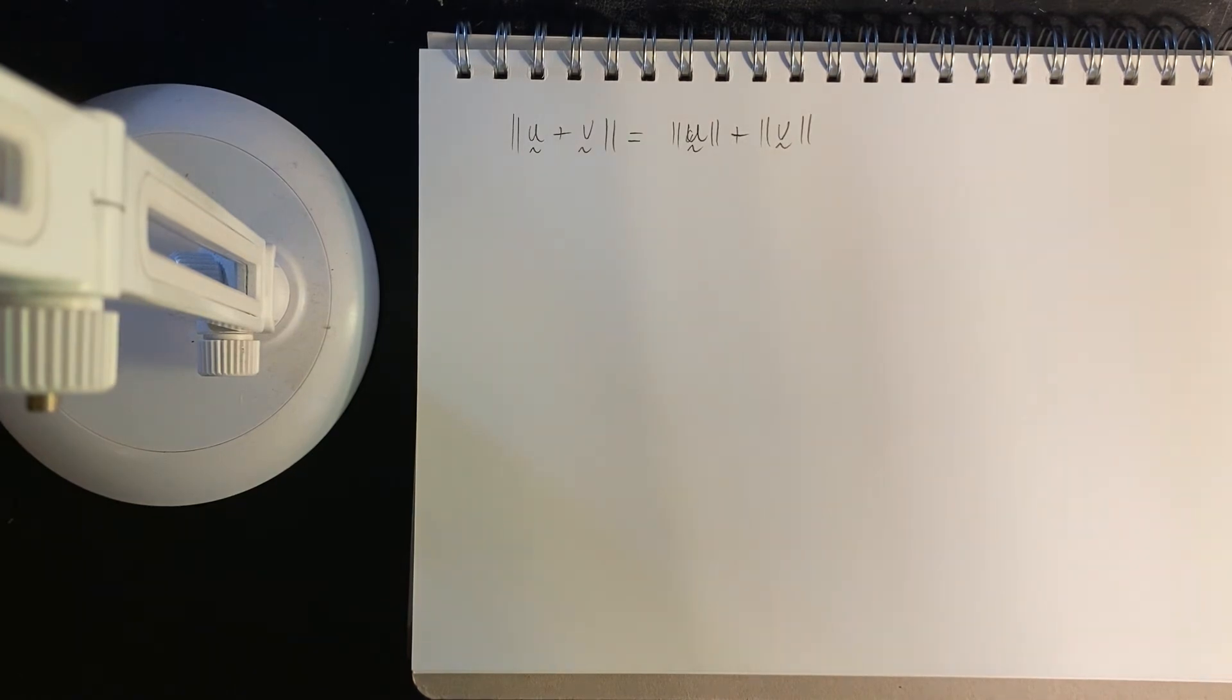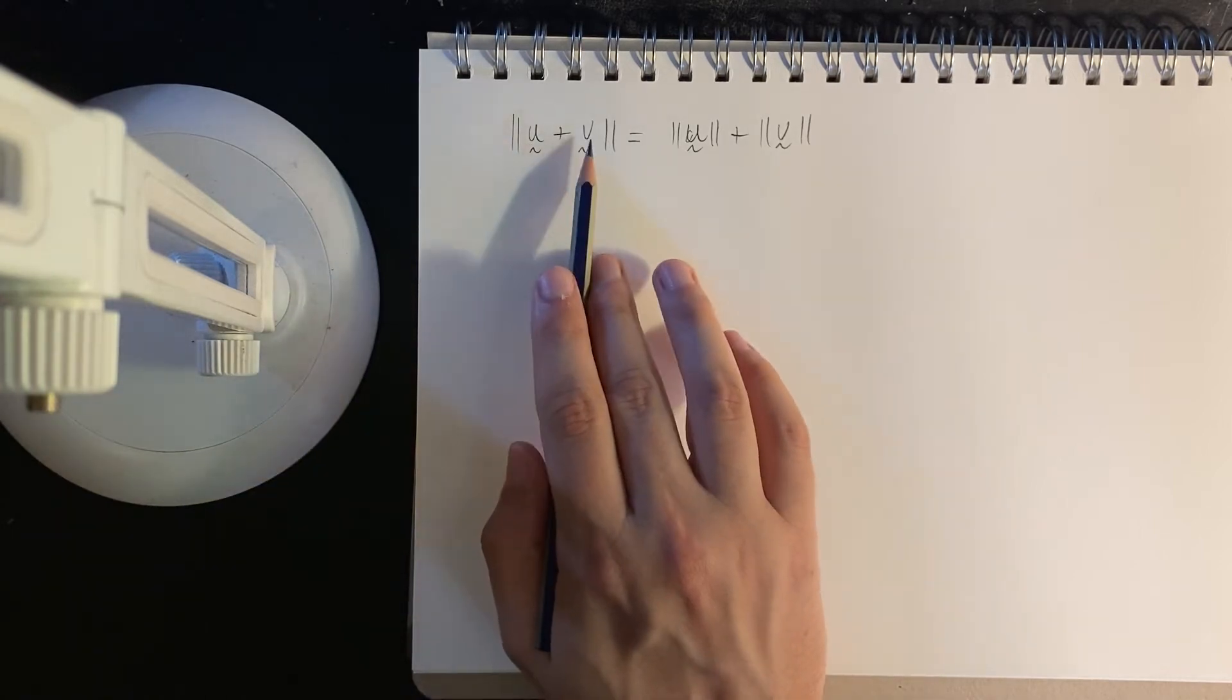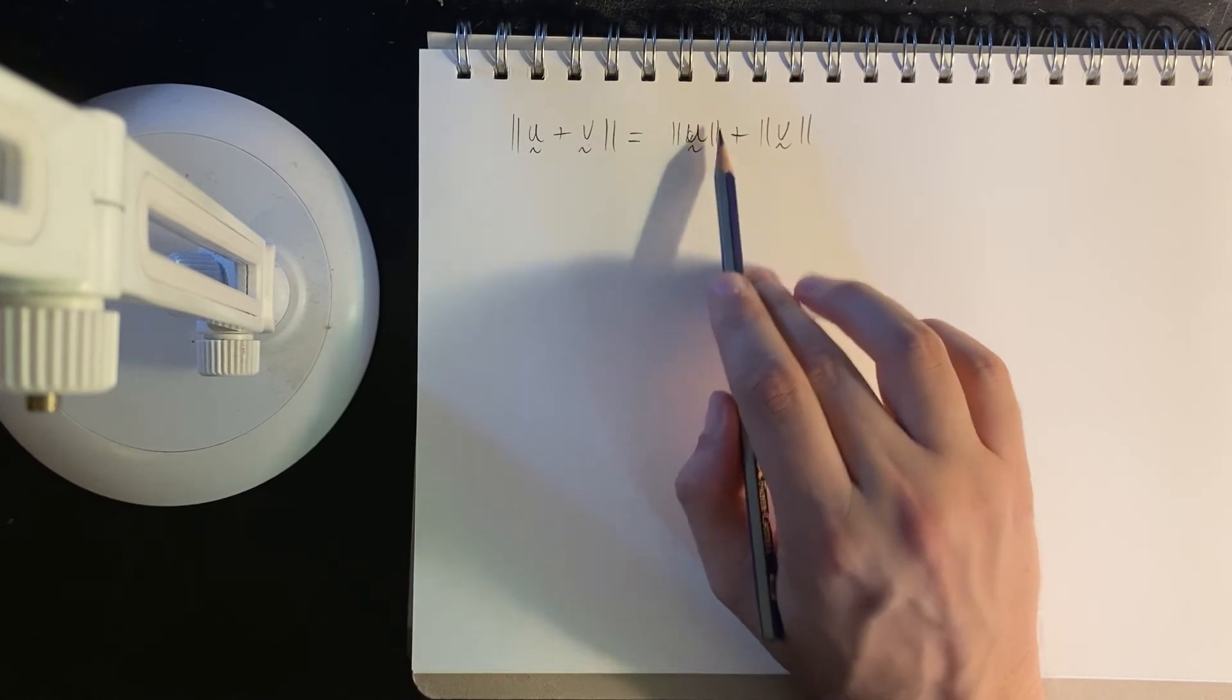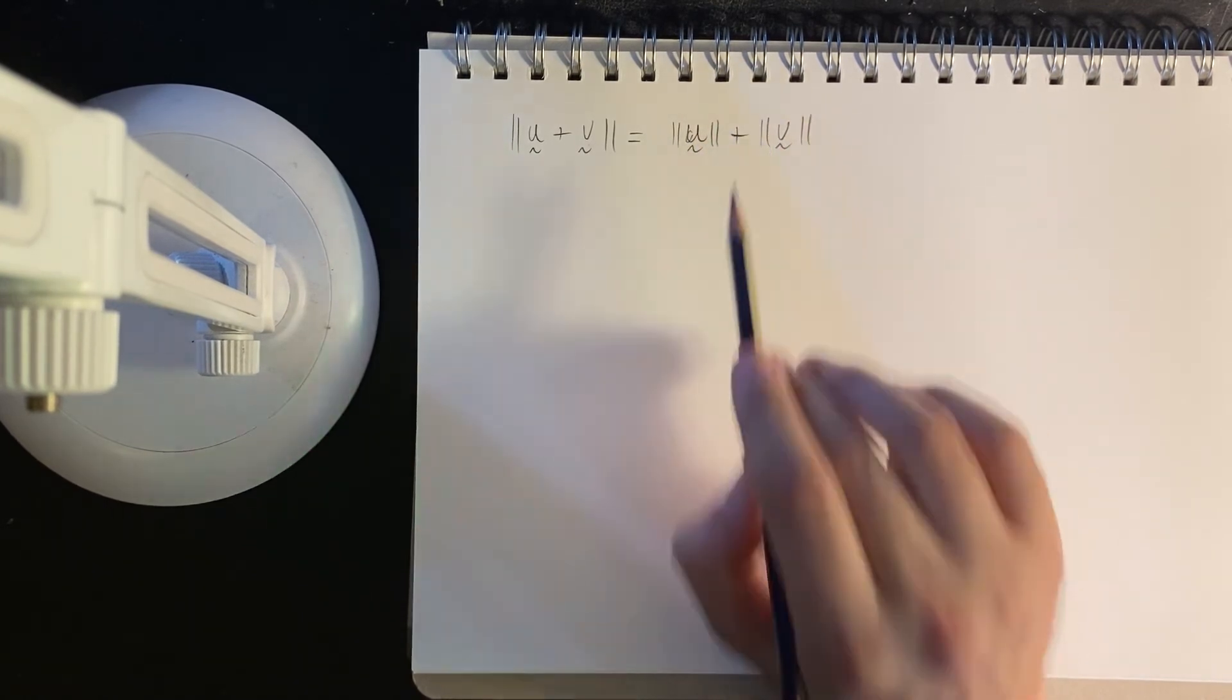Well, think about numbers. 1 plus 2 has an absolute value of 3. Absolute value of 1, absolute value of 2. Yeah, that works.